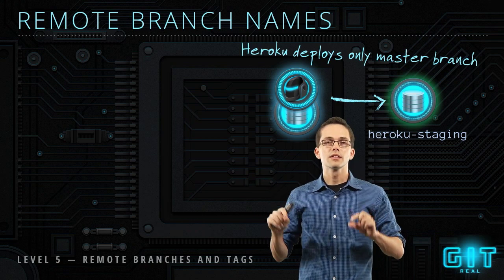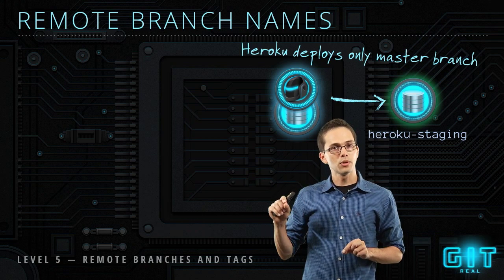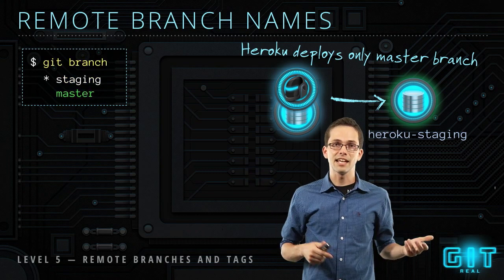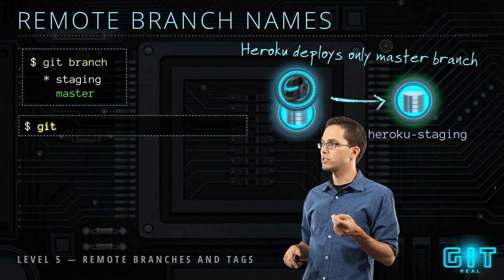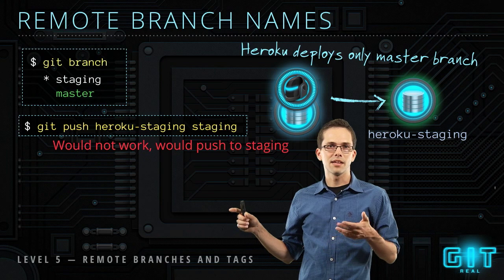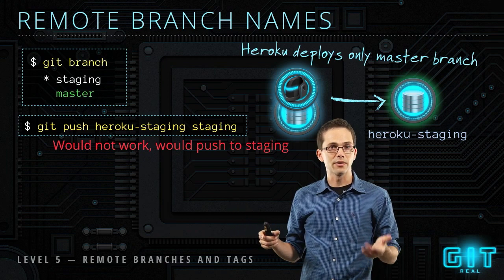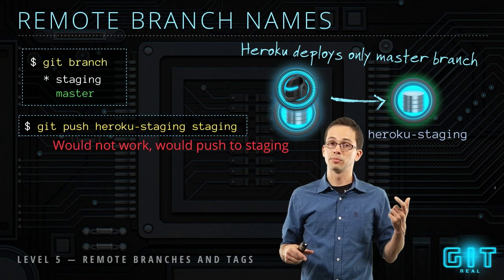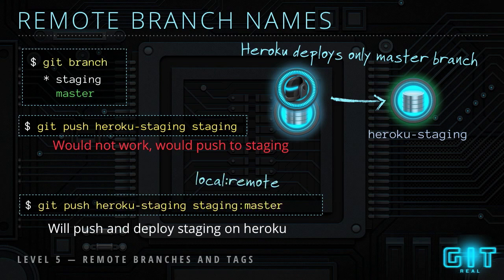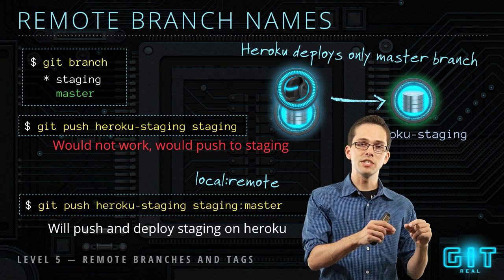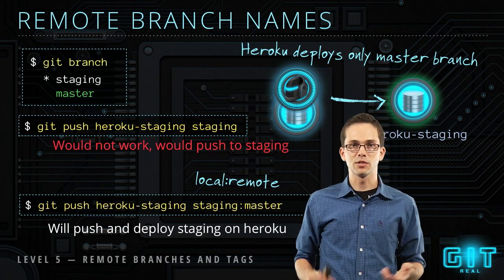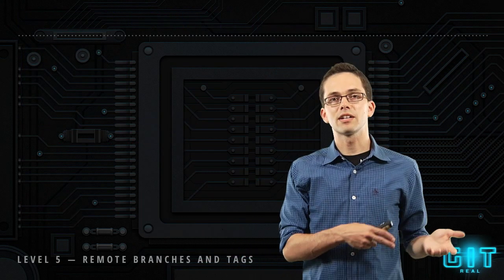Let's say one of our remote branches is a Heroku staging server called heroku-staging. Heroku only deploys the branch named master, so if we run `git push heroku-staging staging`, it pushes a remote branch called staging and nothing gets deployed. Instead, we run `git push heroku-staging staging:master` — that links our local staging branch to the remote Heroku master branch, so when we push it deploys from staging to master.